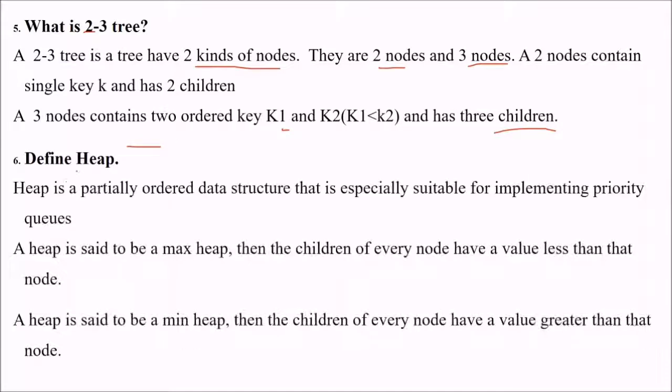Define heap. Heap is a partially ordered data structure that is suitable for implementing priority queues. Do not confuse this heap with the heap memory along with stack memory. A heap is said to be max heap if the children of every node have a value less than that of the node. If a tree is said to be min heap, then the children of every node have a value which is greater than the node.